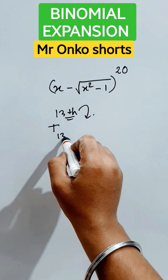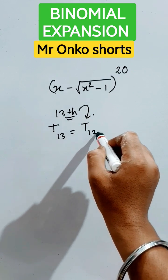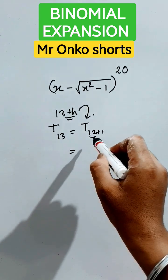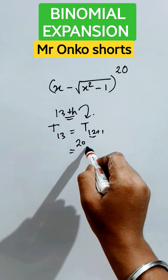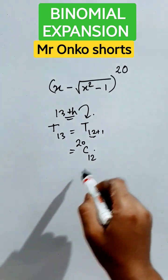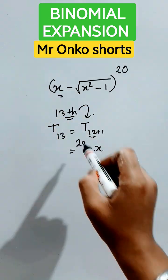Try T₁₃, that equals T subscript 12+1. Now we have to utilize this part. We know that this is r actually, so 20C12 into x to the power—this is the first term—that is 20 minus 12, that is 8.